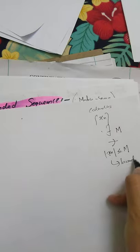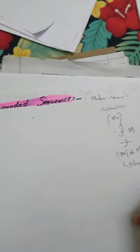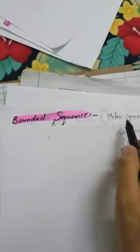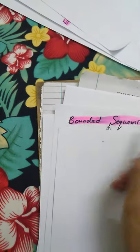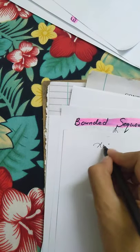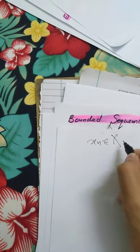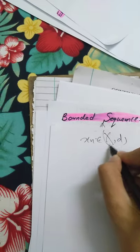Now here space is what? Space is a metric space. So in a metric space, a sequence xn - when will it be bounded?